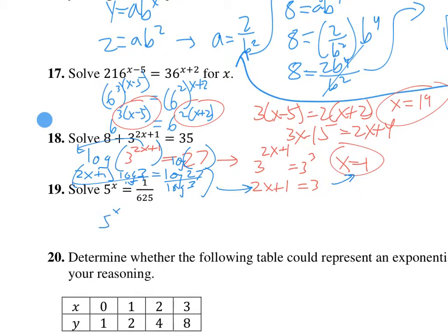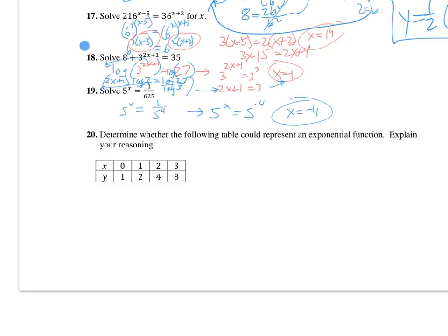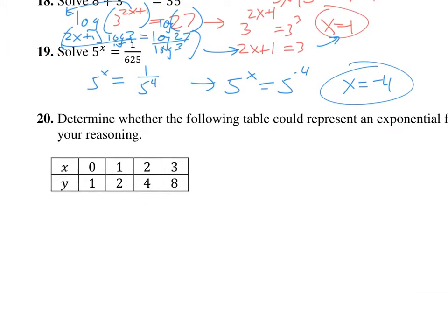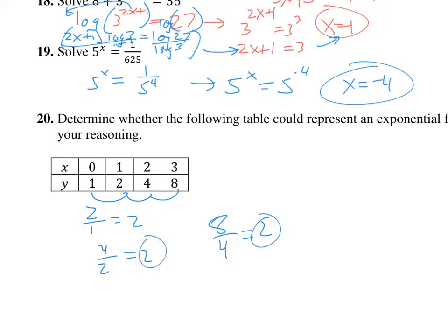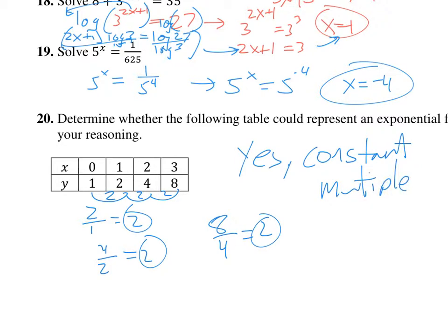Here, 625 is 5 to the 4th, so 5 to the X equals 5 to the negative 4, and X equals negative 4. Last but not least: could this be an exponential function? We've got to check the quotients. 2 divided by 1 is 2; 4 divided by 2 is 2; 8 divided by 4 is 2. We have a constant ratio — we're multiplying by 2 each time. So yes, the answer is yes — it has a constant ratio of 2.